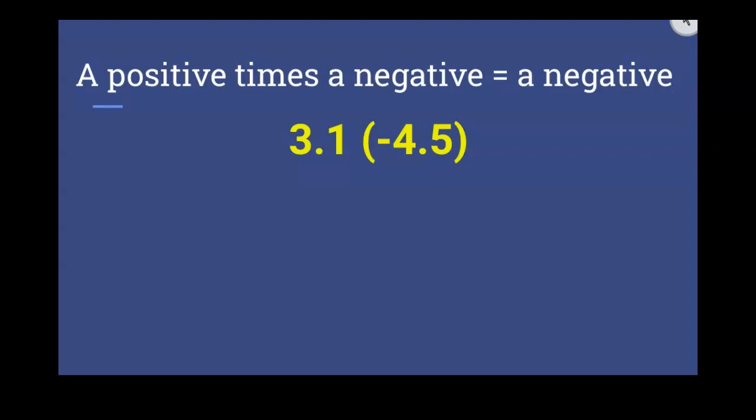So you could multiply 3.1 times negative 4.5. We could do that straight out. Just like any normal multiplication problem, you could do 3.1 times 4.5 and then know your answer is going to be negative.